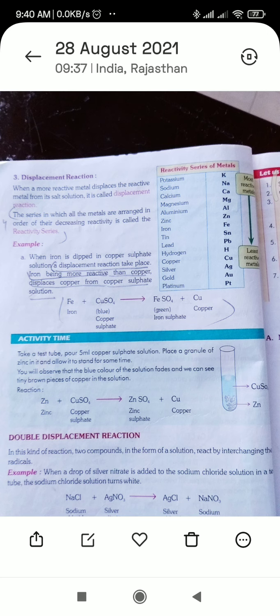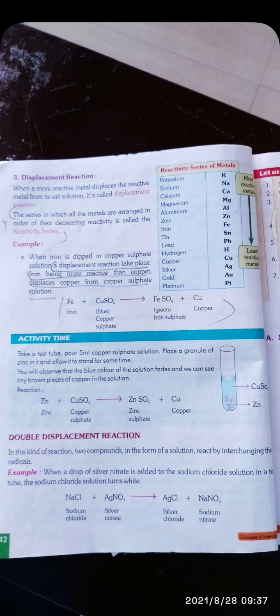I have put here a table. We have potassium, sodium, calcium, magnesium, aluminum, zinc, iron, tin, lead, hydrogen, copper, silver, gold, platinum, in descending order of reactivity. So this is the information that potassium is the highest reactivity metal. Then comes sodium, calcium, magnesium, yeh in ke phir reactivity kam hoti jaati hai. Platinum, gold, silver yaha